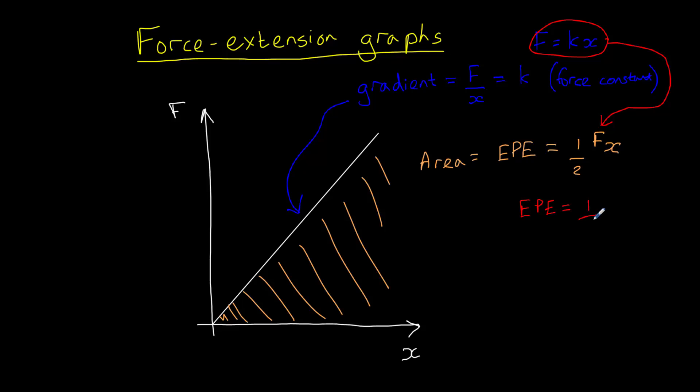which is half kx squared. You see that all we've done is replace the f with kx to give us half kx squared. And that's our equation for elastic potential energy.